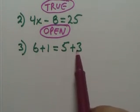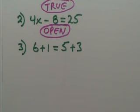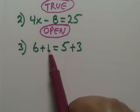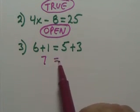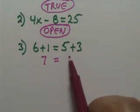Number three, six plus one equals five plus three. Six plus one, that's seven. Five plus three, that's eight.